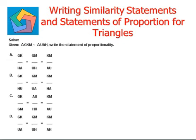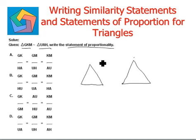Let's look at the next question. Solve. Given triangle GKM is similar to triangle UHA, write the statement of proportionality. Again we draw two rough looking triangles. So this is G, K, and M, U, A, and H.